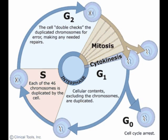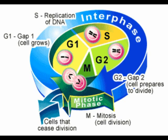Following the S stage, the G2 stage spans from the completion of DNA replication to the onset of mitosis. During this stage, the cell synthesizes proteins that will assist cell division — for example, it makes the proteins that form microtubules. Following interphase, the cell enters the M, or mitotic, stage. The cell division stage includes mitosis, or nuclear division, and cytokinesis, or division of the cytoplasm.